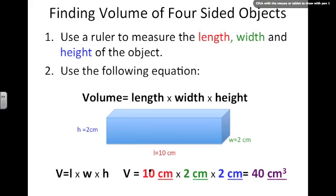Finding volume of a four sided object. You will need a ruler to do this activity. To use the ruler you must find the length, the width, and the height of the object, and then use the following equation: Volume equals length times width times height.